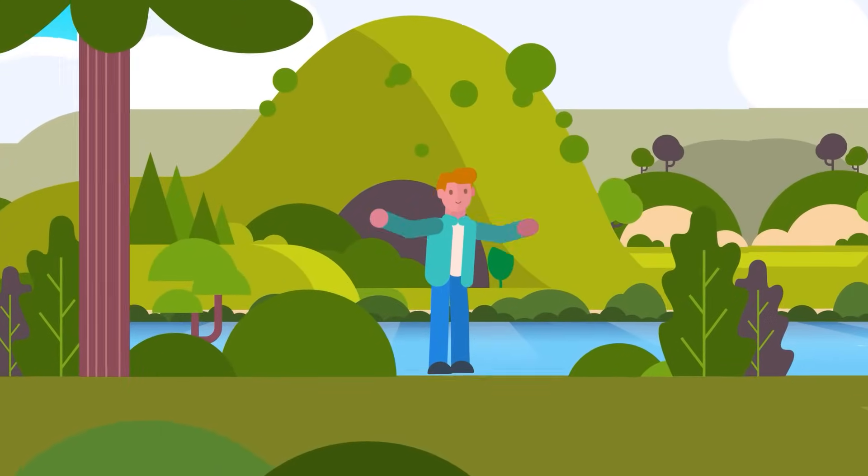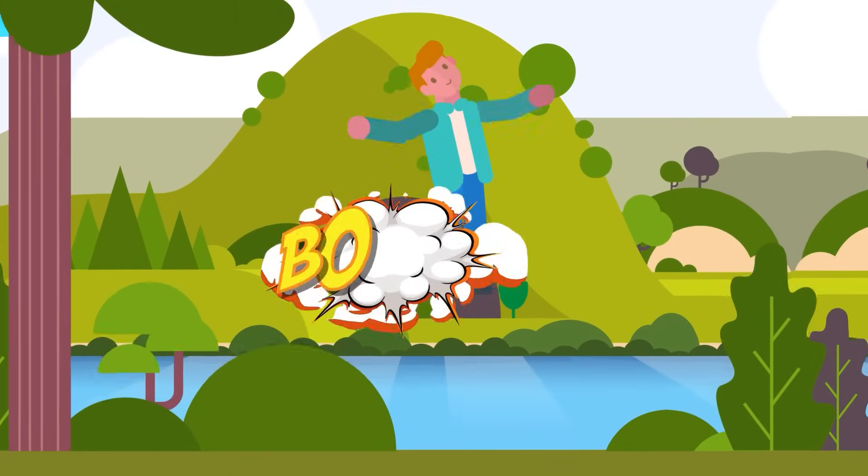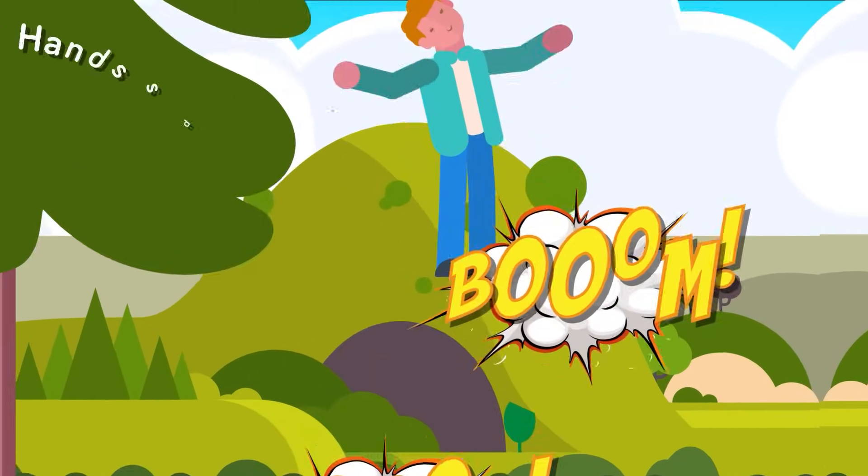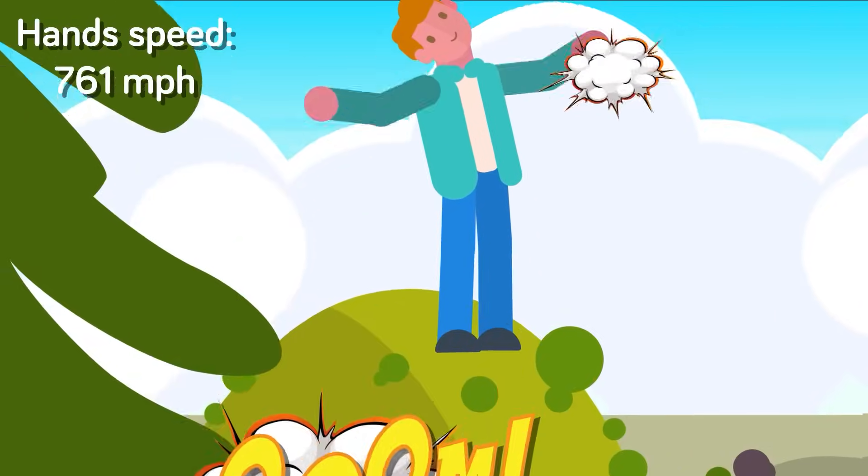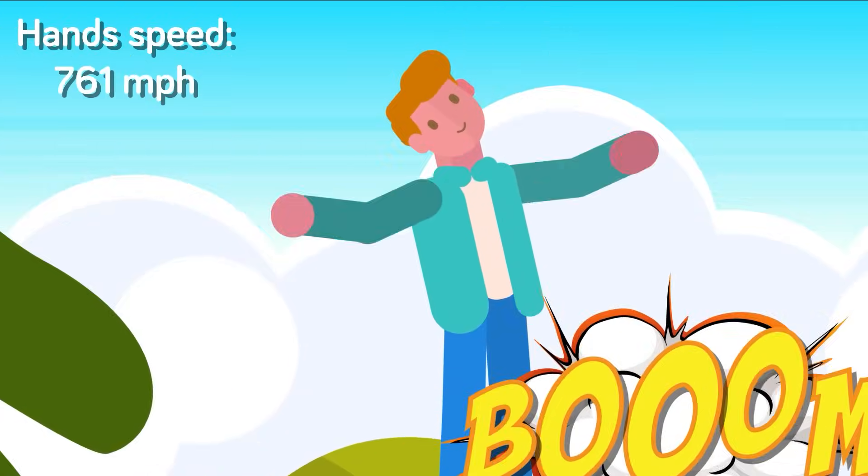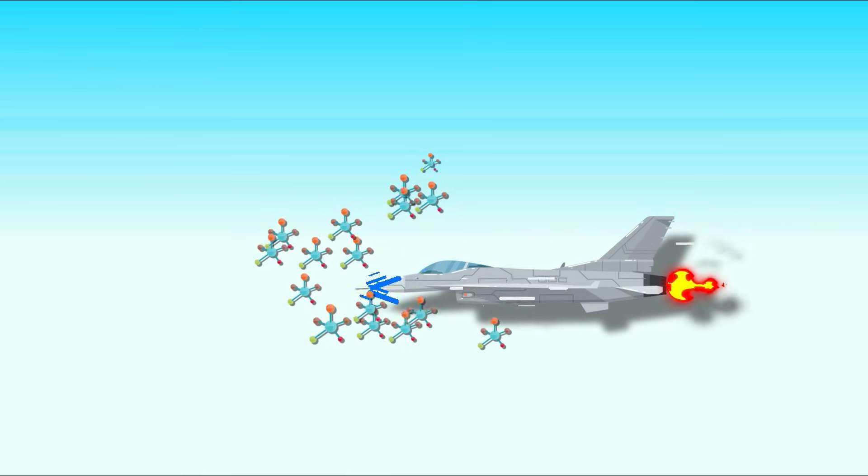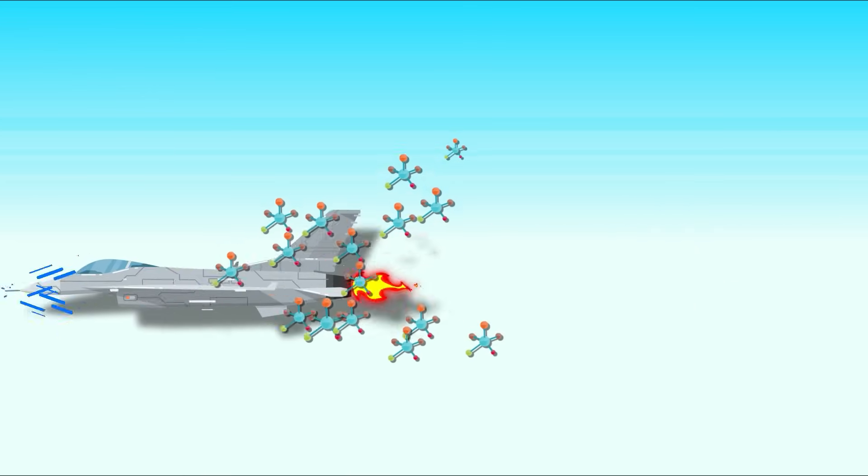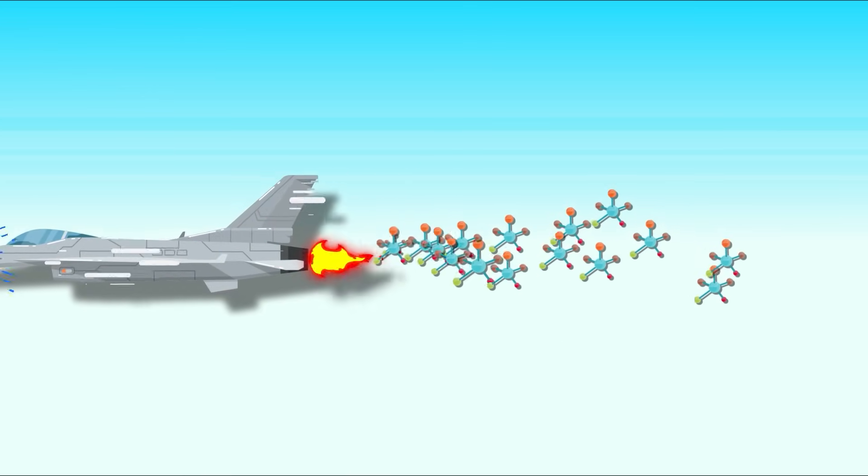If you could move your hand at 761 miles per hour, you could create a mini sonic boom as your hand moved through the air. The same thing applies when an aircraft reaches supersonic speeds. The buildup of pressure at the front of the plane instantly fills the space behind the tail of the plane, where the aircraft was a moment before. This is what causes the sonic boom.